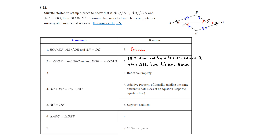Next, using the reflexive property: FC = FC (the segment is congruent to itself). Then by the additive property of equality, AF + FC = FC + DC — adding equal amounts to both sides keeps the equation true.